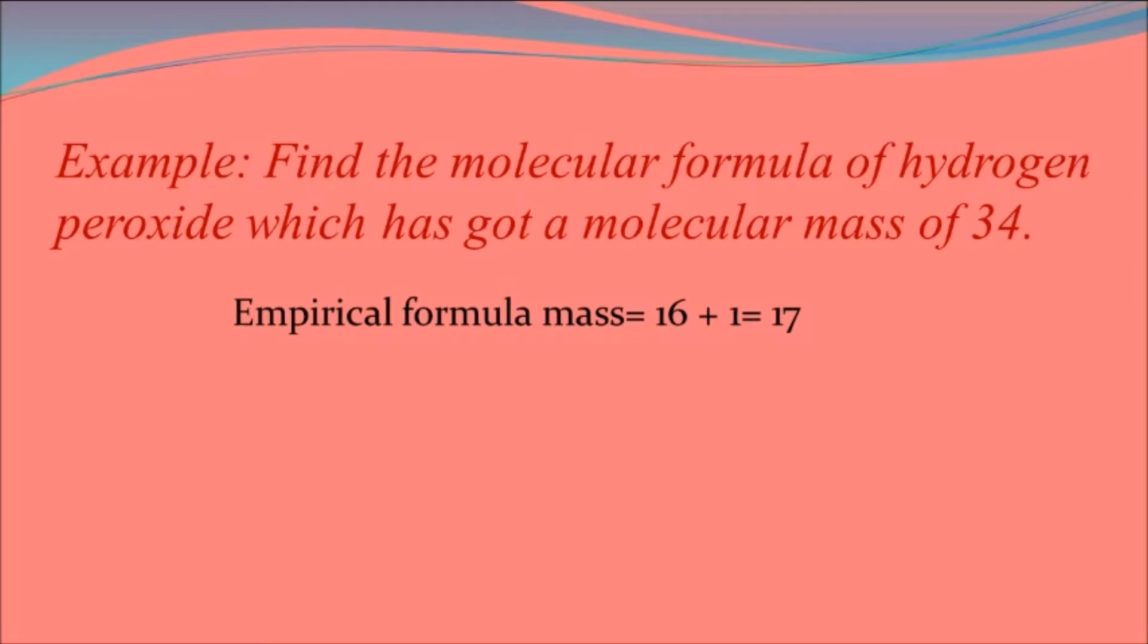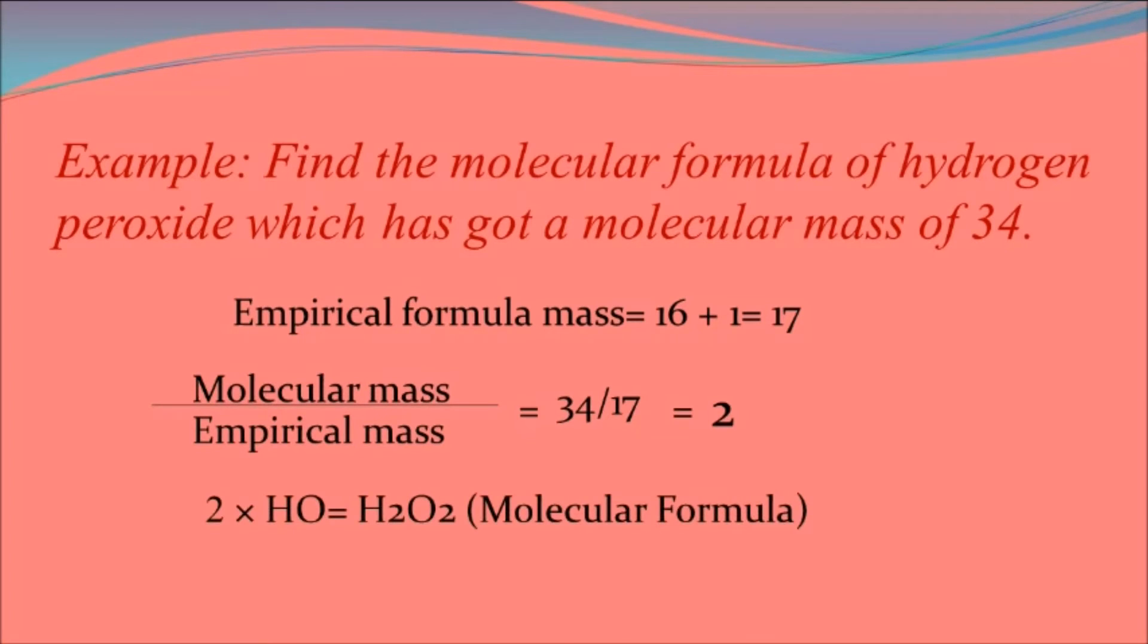Then we divide the molecular mass by 17 to get 2, and finally we multiply this 2 by the number of atoms in hydrogen peroxide. This gives H2O2, the molecular formula.